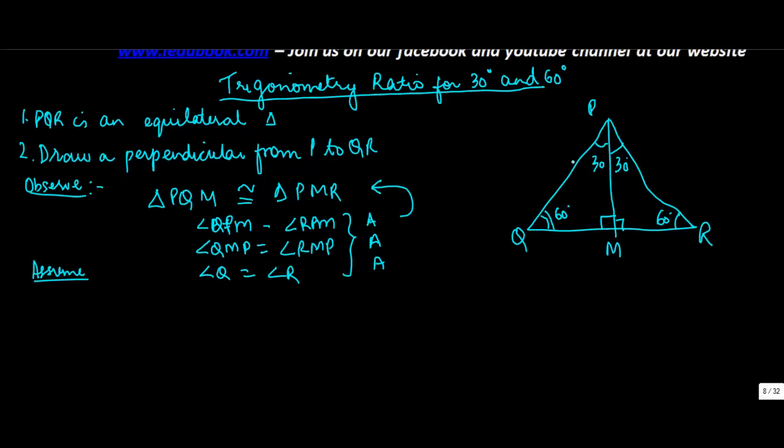Now let's assume that PQ is equal to QR is equal to PR is equal to 2X. Now if this is the case, then QM is equal to MR.